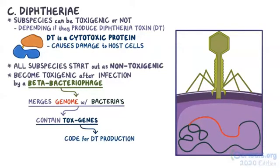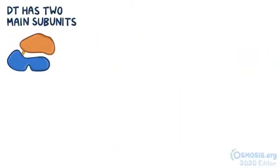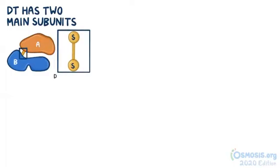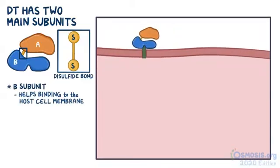Following this, C. diphtheriae can make DT and, in turn, cause diphtheria. Now DT has two main subunits, A and B, joined by a disulfide bond, with each of the subunits playing a specific role in the invasion and destruction of host cells. The B subunit, which is the bigger portion of the DT complex, helps bind to the host cell membrane.